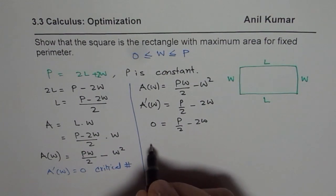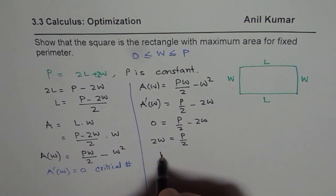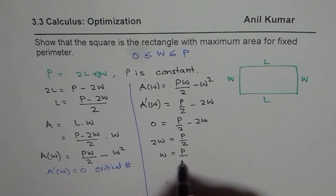From here we can solve for W. We have 2W equals P over 2, or width equals P over 4.